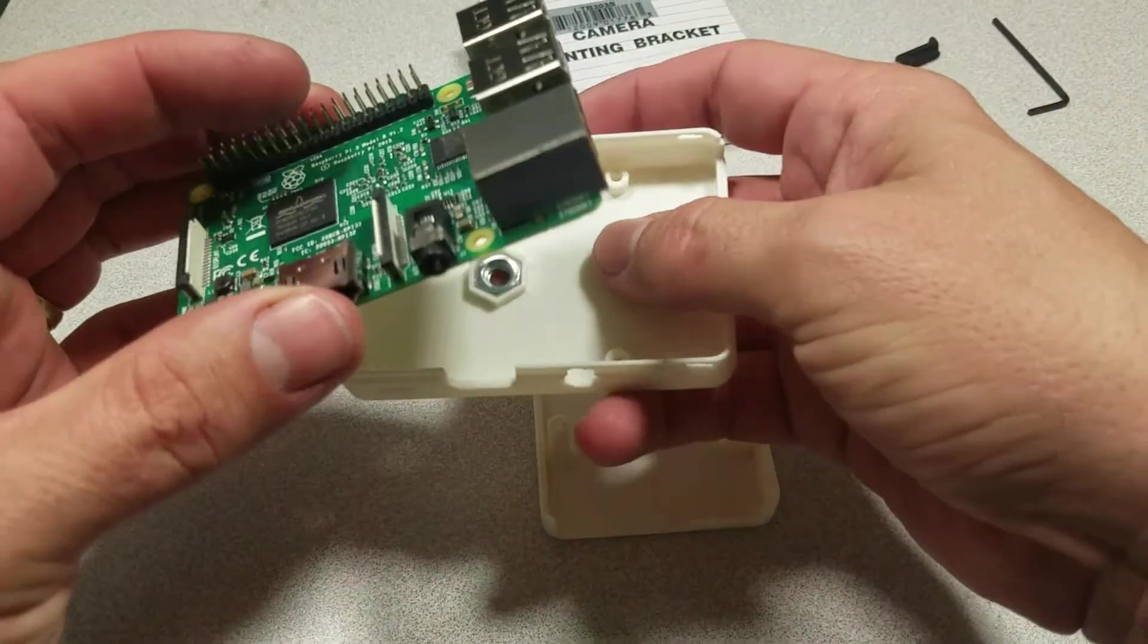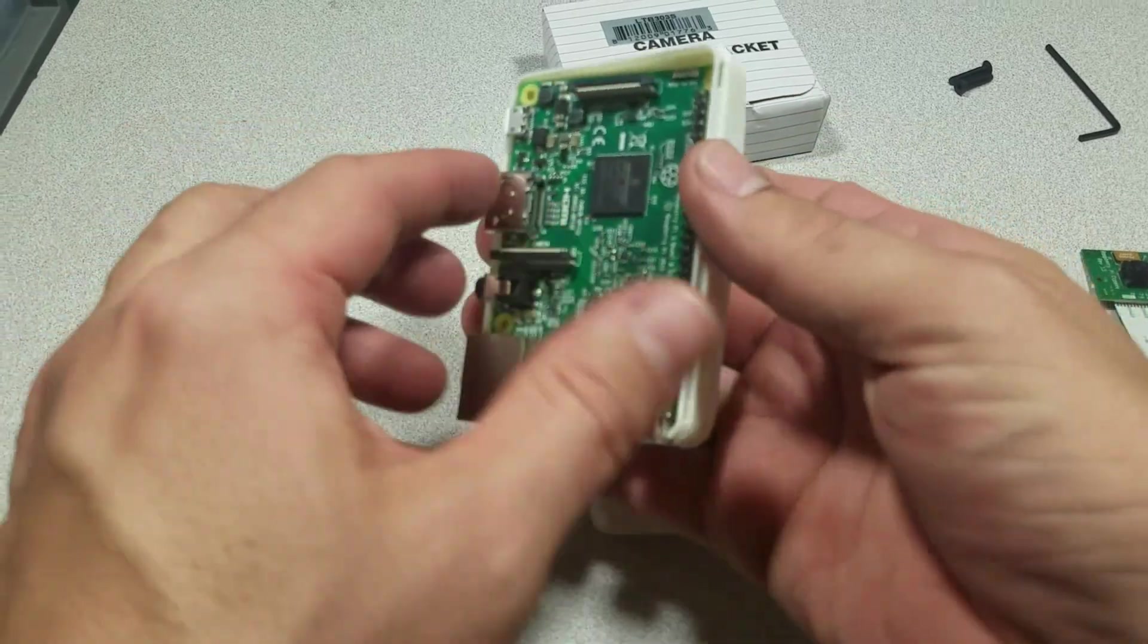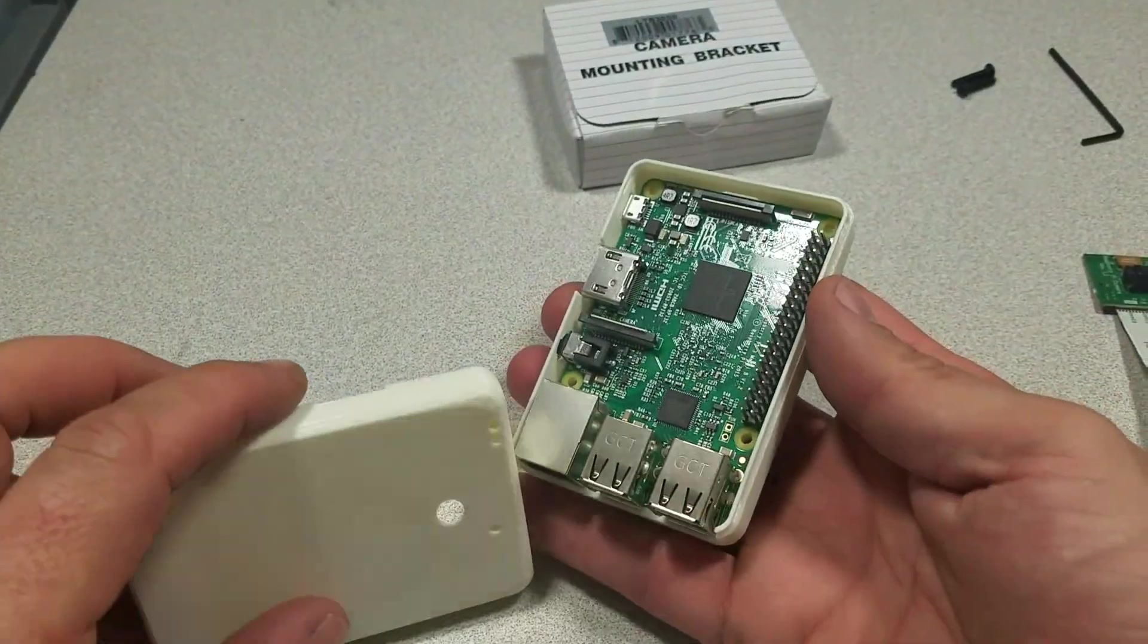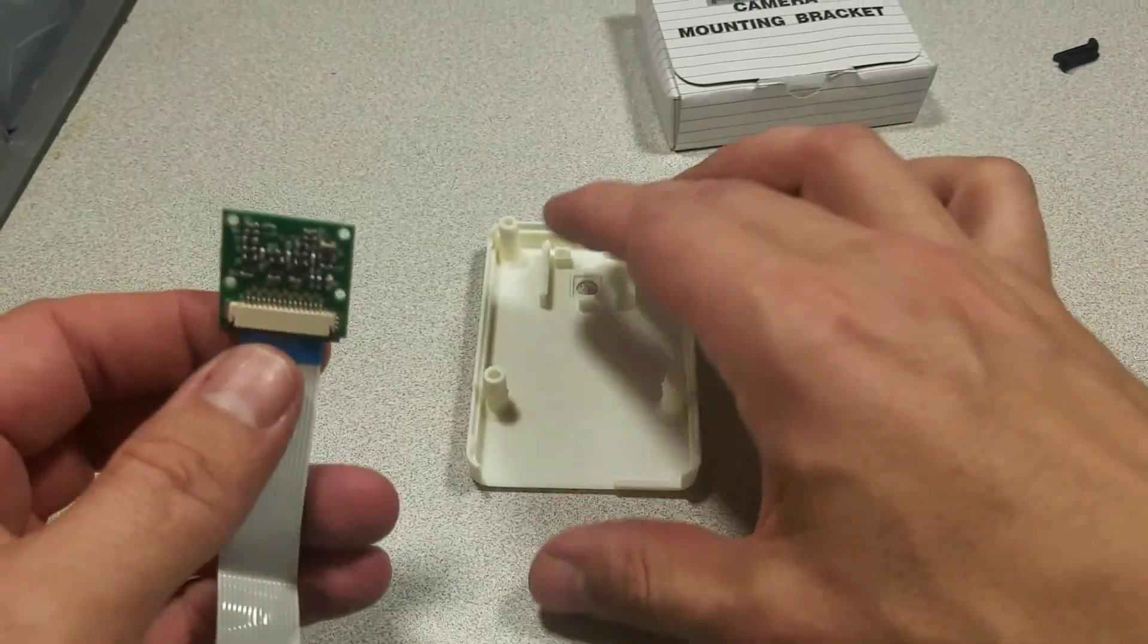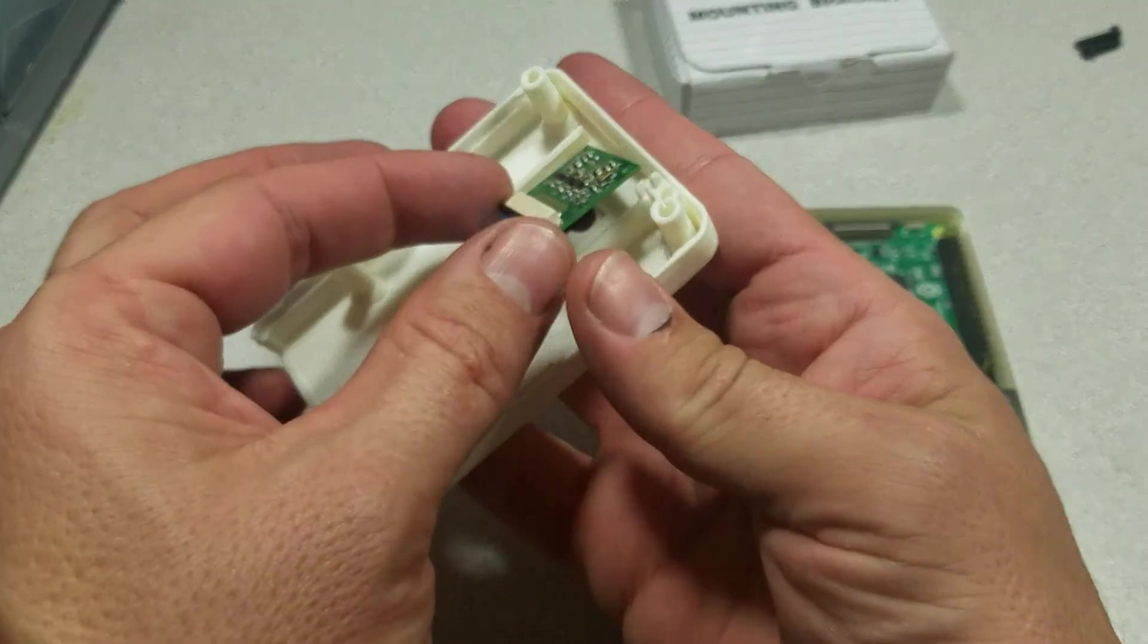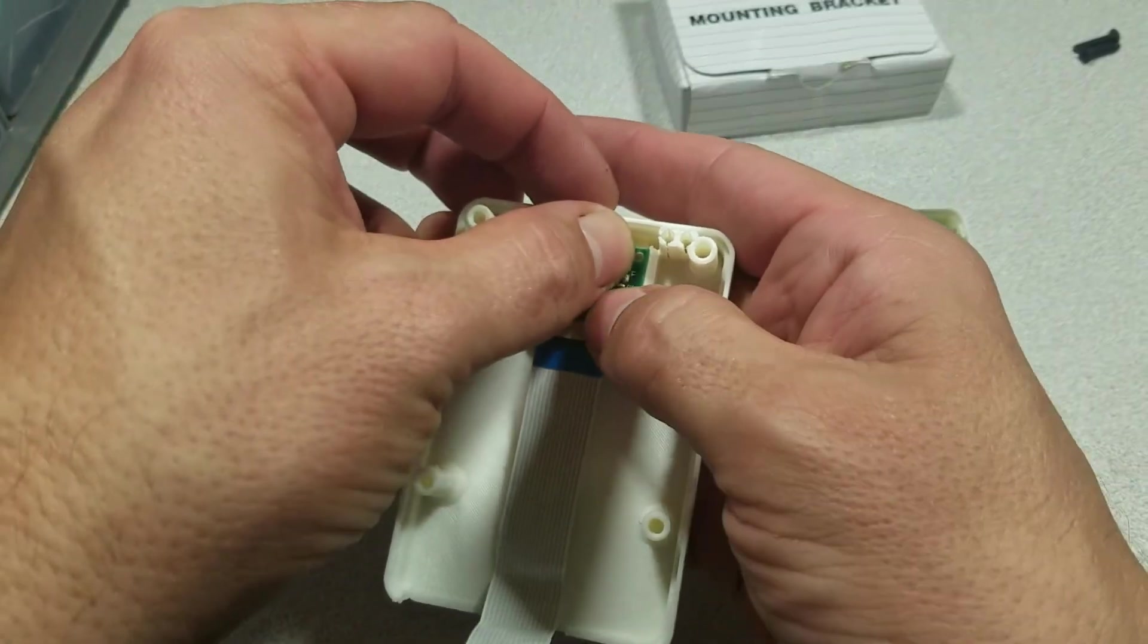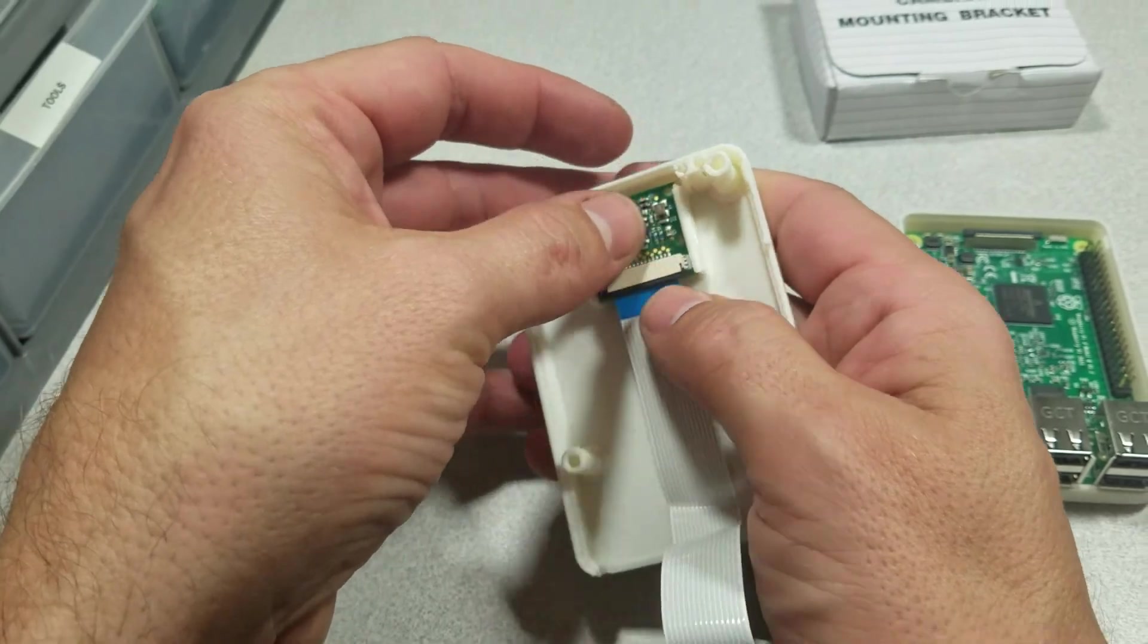So the first thing is we will put it in the case. And then before we put the front on we'll want to get the camera in there. And that's as easy as lining up the camera with the opening and then snapping it into place.